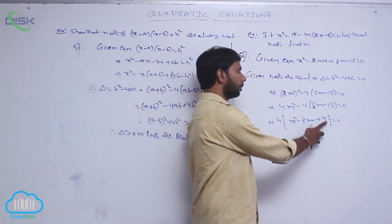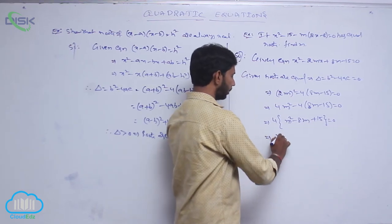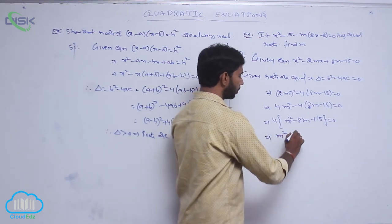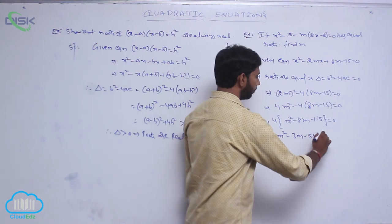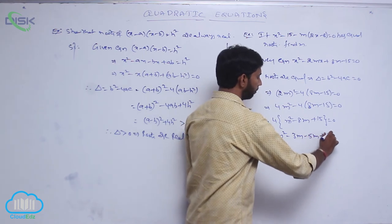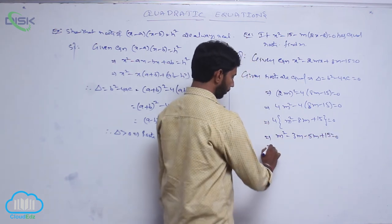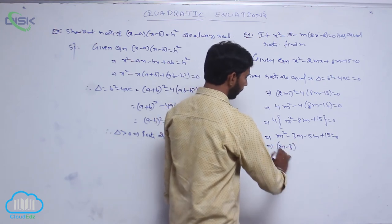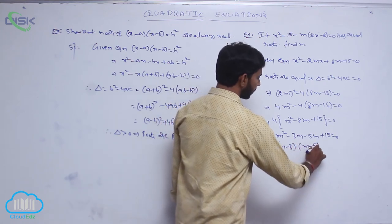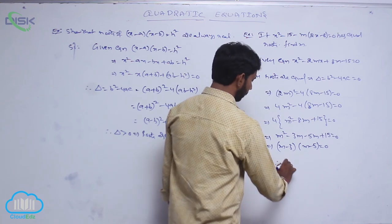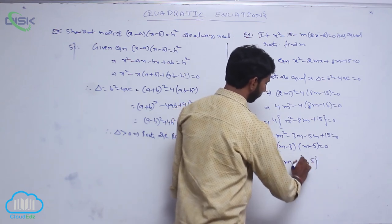Factoring m square minus 8m plus 15 equals 0: we find two numbers that multiply to 15 and add to 8, giving factors (m minus 3)(m minus 5) equals 0. Therefore, m is equal to 3 or 5. The values of m are 3 and 5.